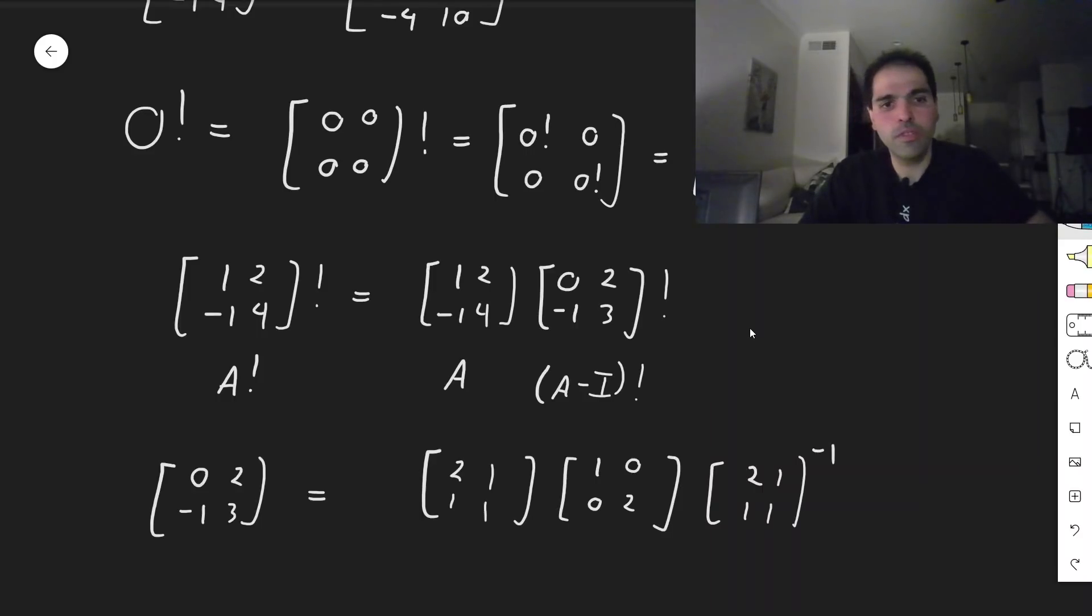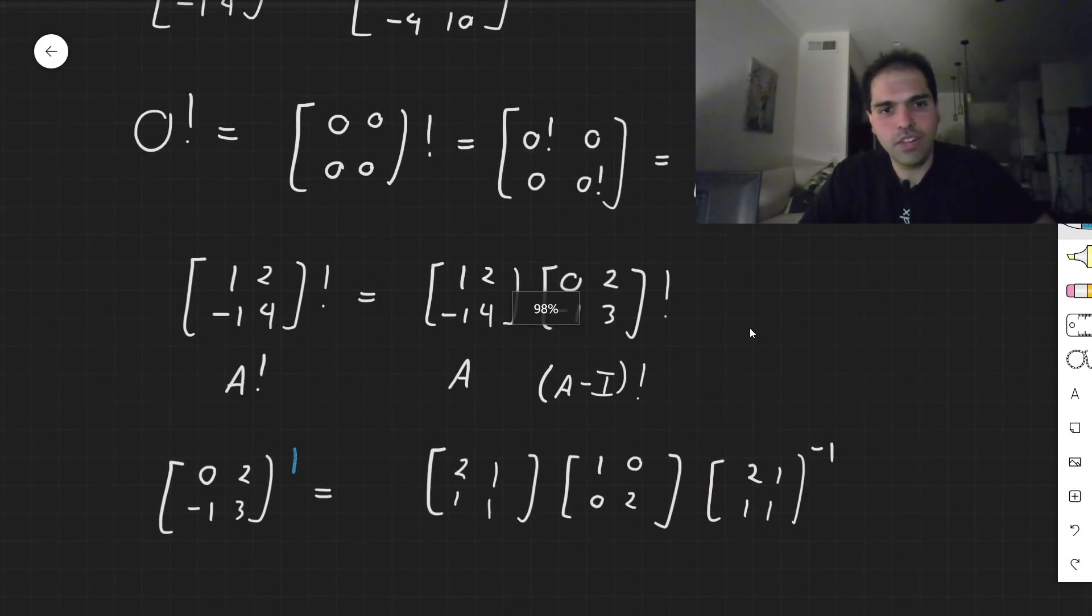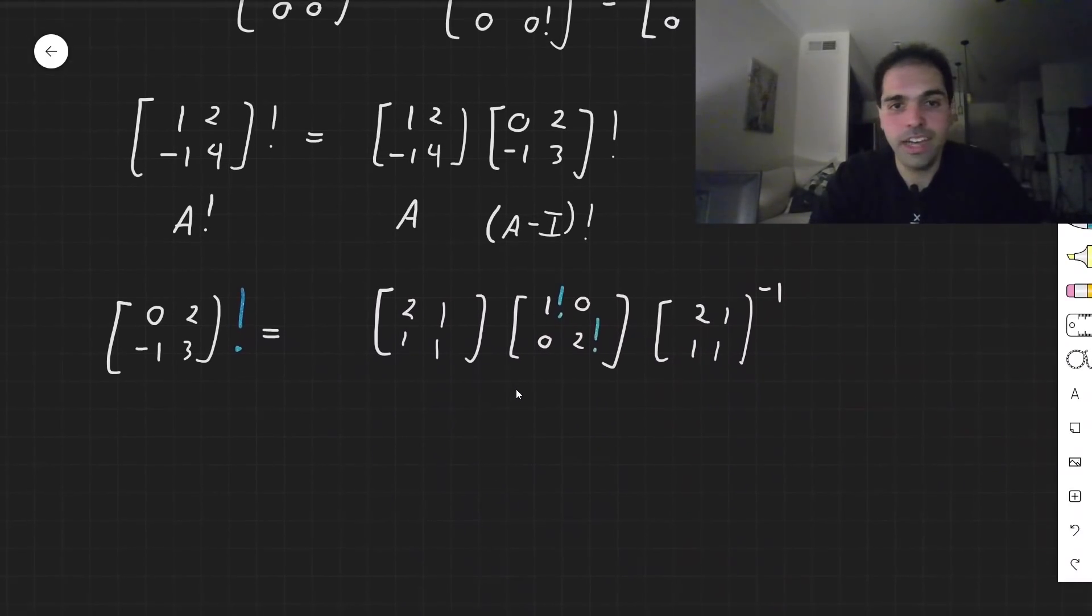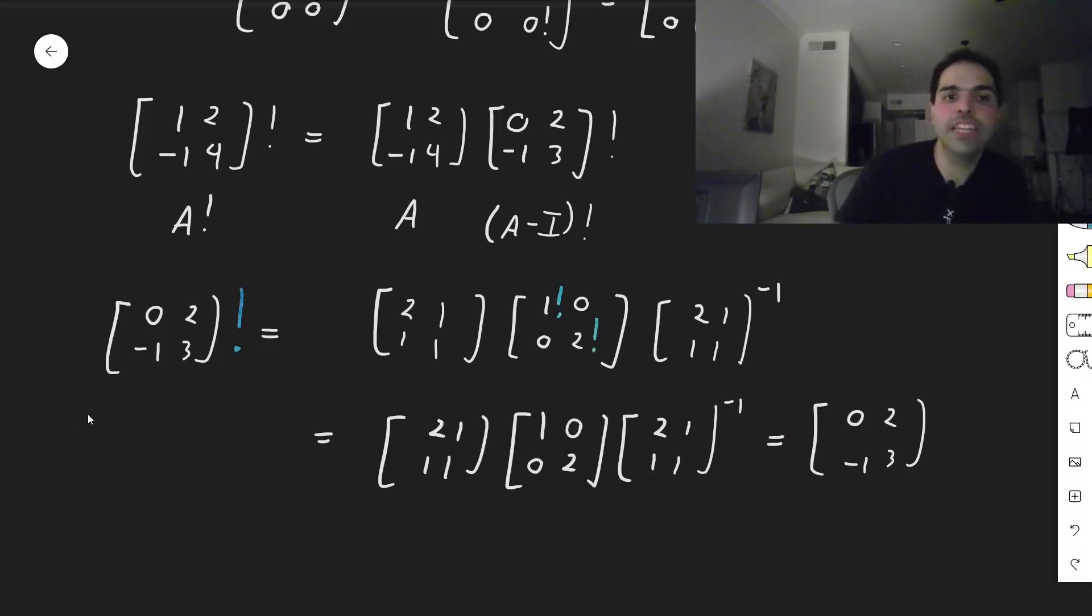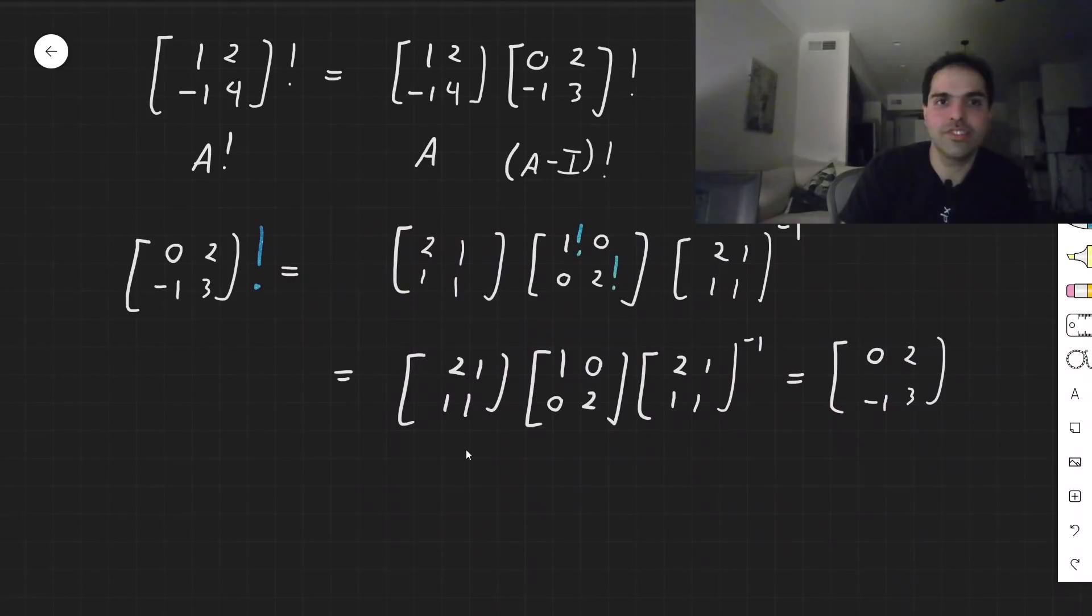And again, to find the factorial, you just put factorial on the eigenvalues. And here's a small miracle happening, actually, just a little coincidence. So [2, 1; 1, 1], 1 factorial is 1, [1, 0; 0, 2] for 2 factorial, and then [2, 1; 1, 1] inverse. But look, this is actually the same as the original matrix. So it's [0, 2; -1, 3]. So there are actually lots of matrices whose factorial is the same as the matrix itself. And this has to do with the fact that 1 factorial is 1 and 2 factorial is 2.